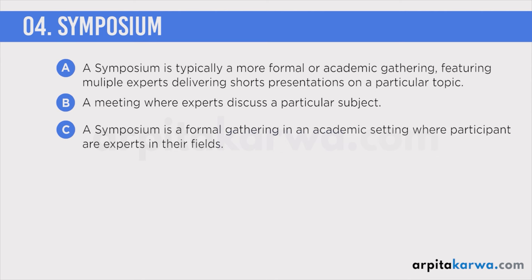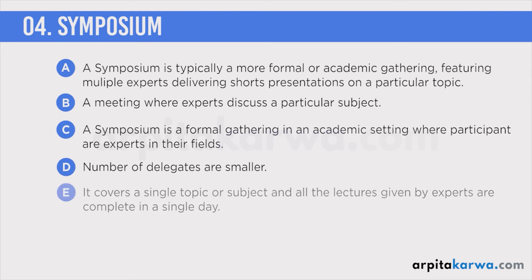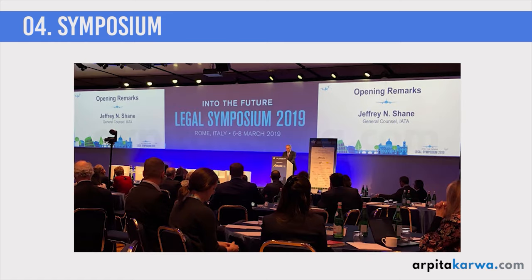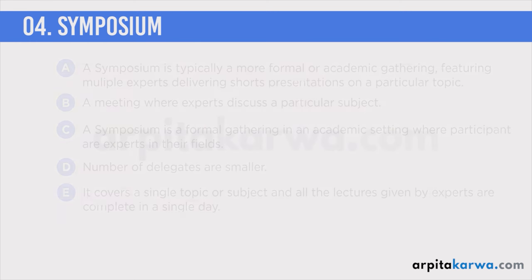A symposium is a formal gathering in an academic setting where all participants are experts in their field. It would be correct to label a symposium as a small-scale conference, as the number of delegates is smaller. The chief characteristic of a symposium is that it covers a single topic or subject, and all the lectures given by experts are completed in a single day. This is similar to a seminar in that a single topic is covered in one day, but in a seminar there is a large audience whereas in a symposium the participants are very limited and all are experts.